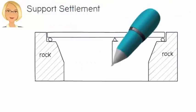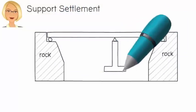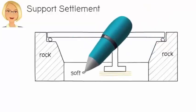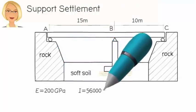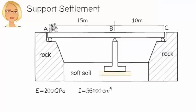The interior support, however, is a pin connected to a substructure that rests on soft soil. The beam is made of structural steel with a modulus of elasticity of 200 gigapascal. Assume a uniform cross-section for the entire beam having a moment of inertia of 56,000 quartic centimeters.